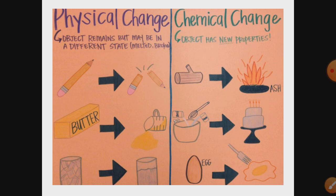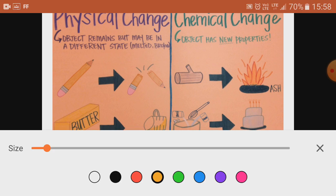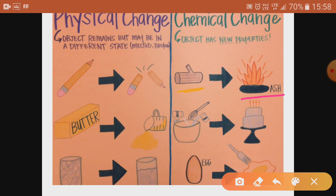In case of a chemical change, the object has a new property. For example, when wood burns, a new substance — ash — is formed. When you bake a cake, you get a new substance after adding all the ingredients and you cannot get back the original ingredients. When you boil an egg or cook an omelette, you get a new product. This is how chemical changes take place.